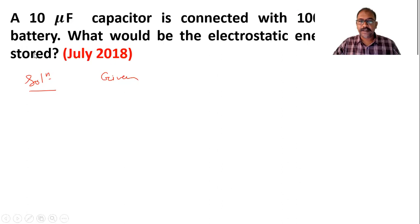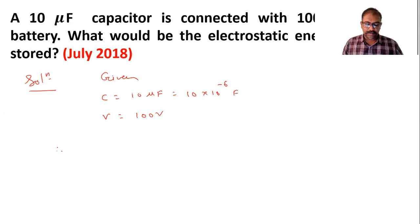Given: C = 10 microfarad, which means 10 × 10⁻⁶ farad. It's connected with a 100 volt battery, so V = 100 volts. We need to find the electrostatic energy stored.